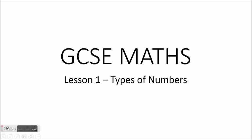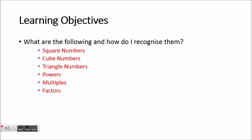Welcome to our very first maths lesson. This is GCSE maths, lesson 1, which is on the different types of numbers that you need to know about for your GCSE. The main types of numbers are square numbers, cube numbers, and triangle numbers. We also have different things we can do with numbers: powers, and then multiples and factors when we're looking at our times tables.